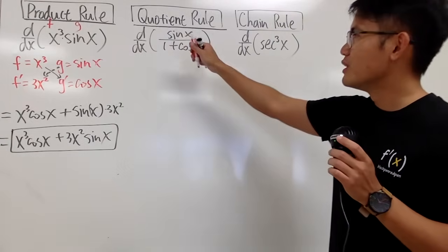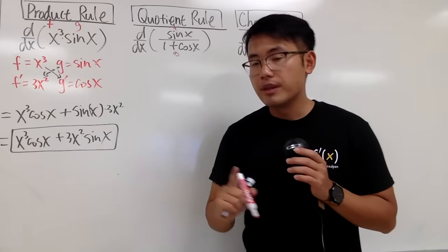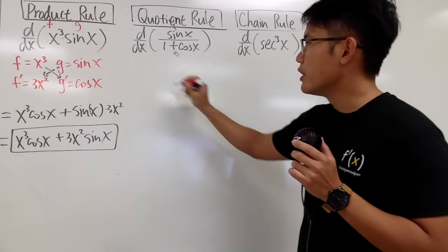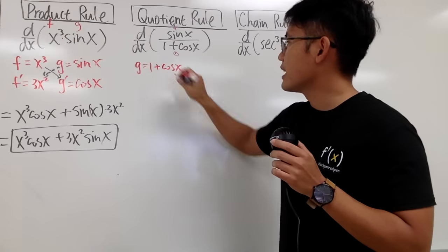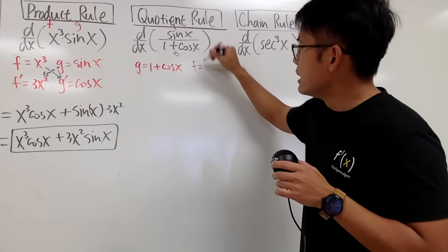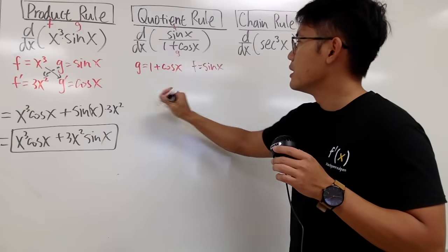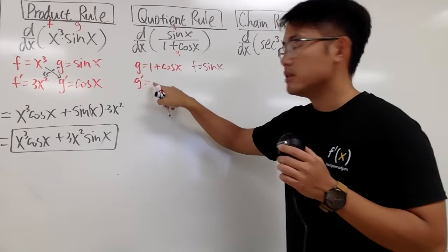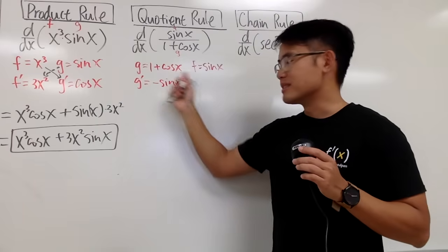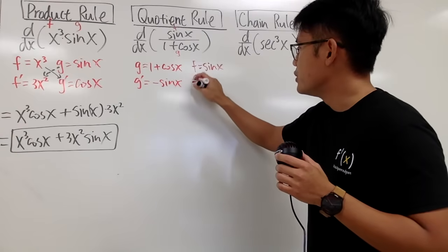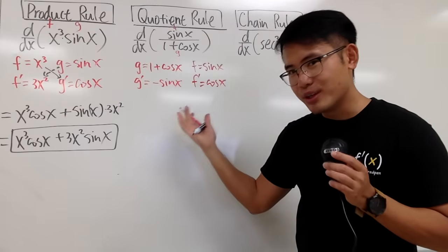Now let me show you guys my memory device for the quotient rule. On the top, I will label this to be f. On the bottom, I will label that to be g. But remember, quotient is the opposite of product, so in this situation I will write down g first, which is 1 plus cosine x. And on the side we put down f, which is sin x. Write them down so you can differentiate them individually. So g prime: the derivative of 1 is 0, and the derivative of cosine x is negative sin x. And f prime: differentiate sin x, we get cosine x.